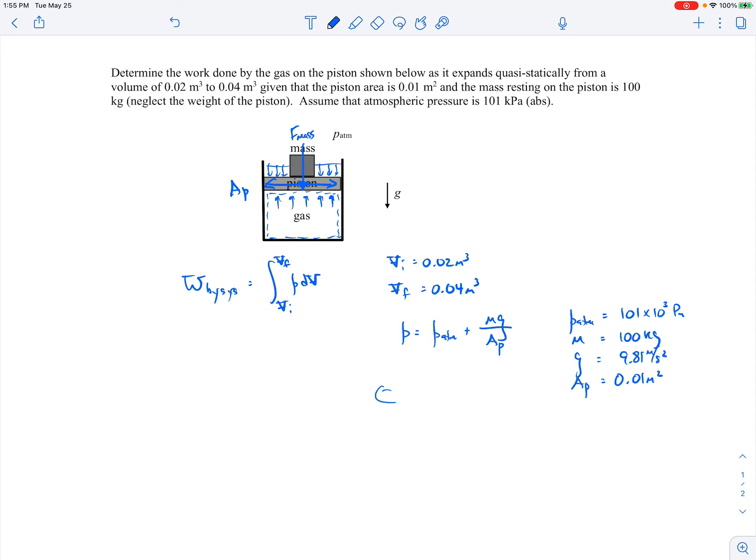The cross-sectional area of the piston is also given as 0.01 square meters. So we can go ahead and plug in the values. If you plug in for the pressure to calculate what the pressure is, that should come out to be 1.99 times 10 to the fifth pascals. Note that that pressure is a constant in this problem.